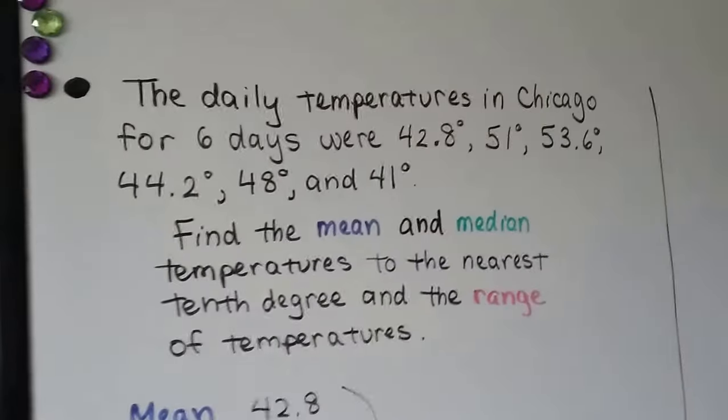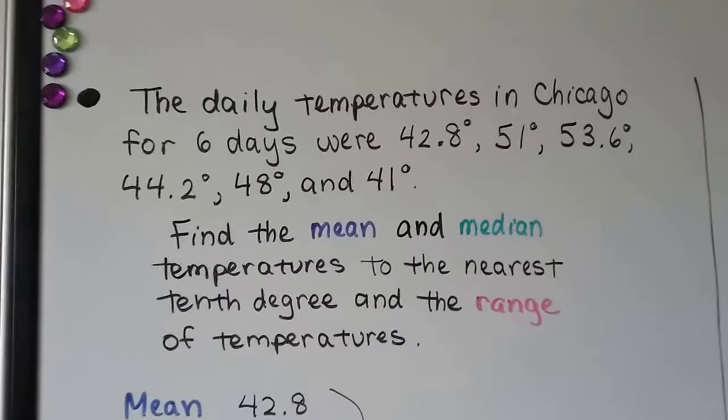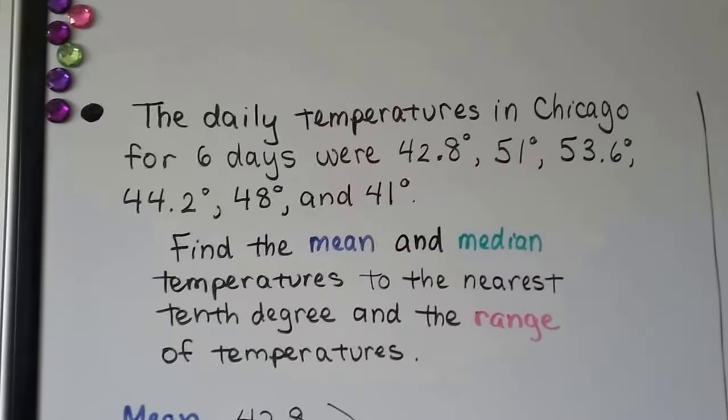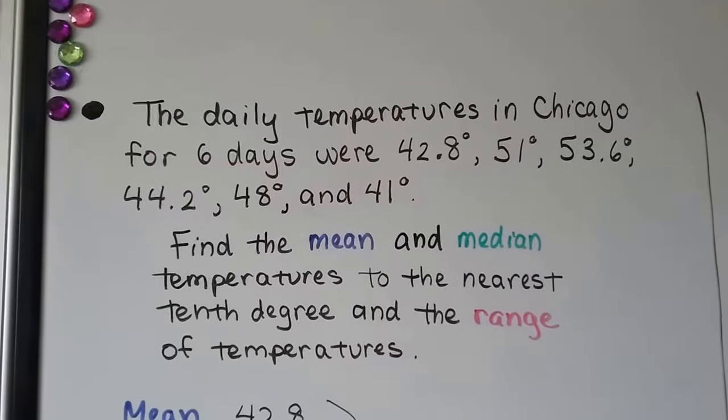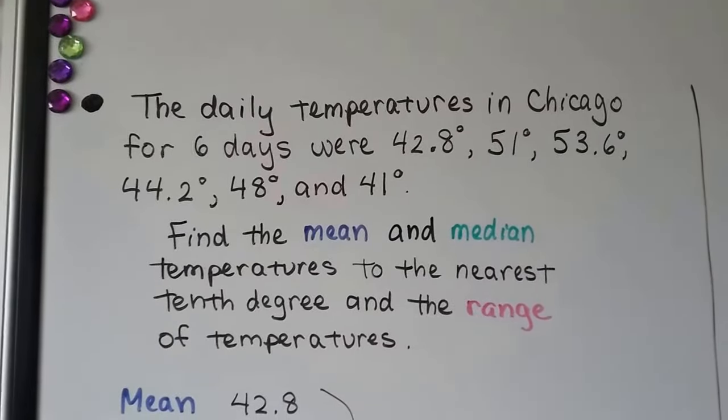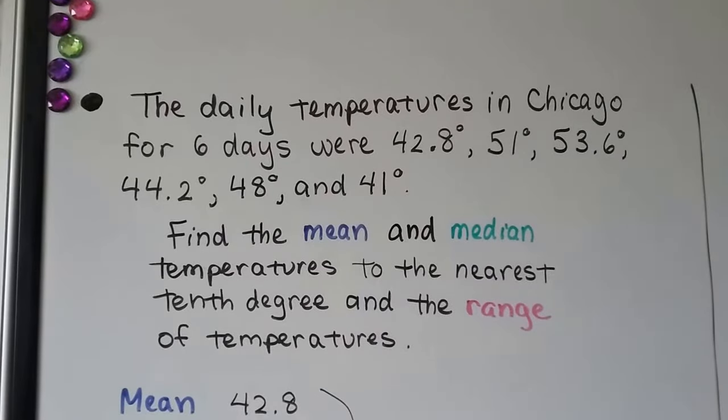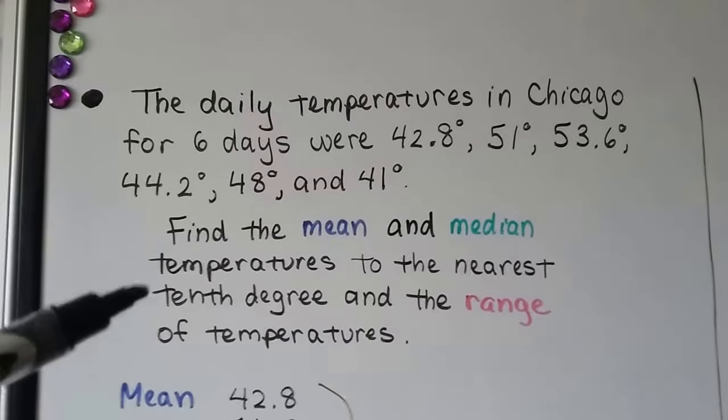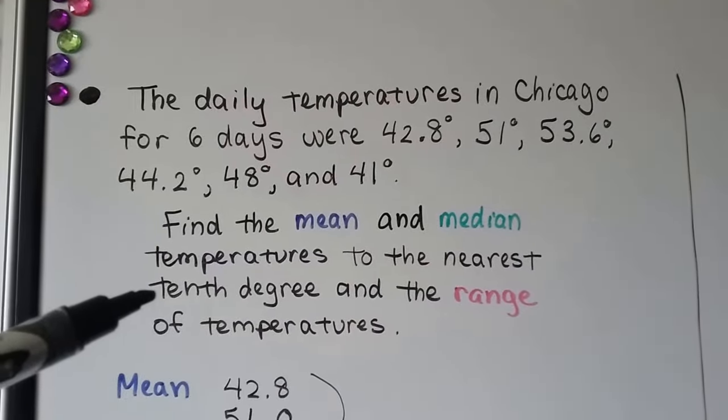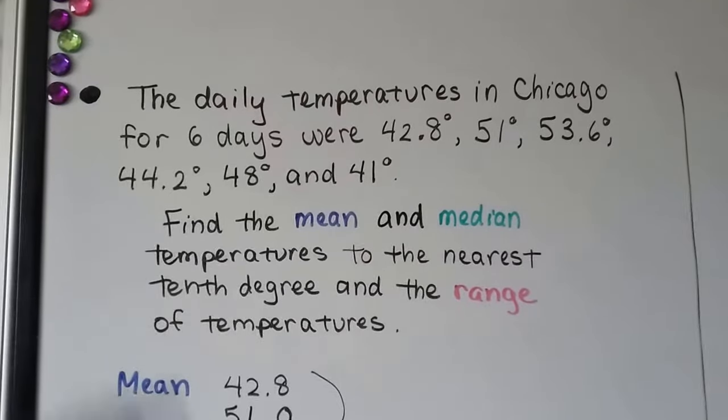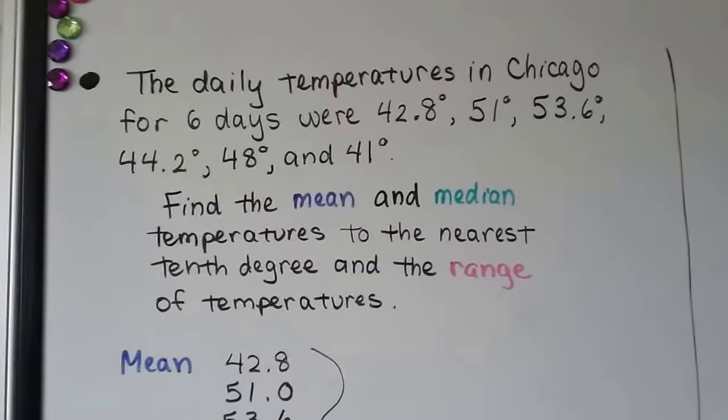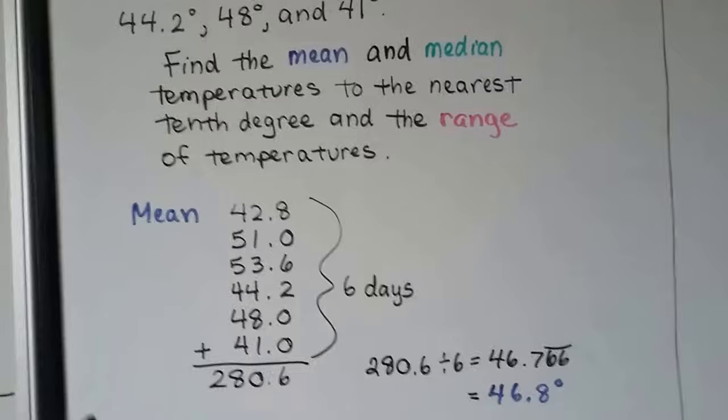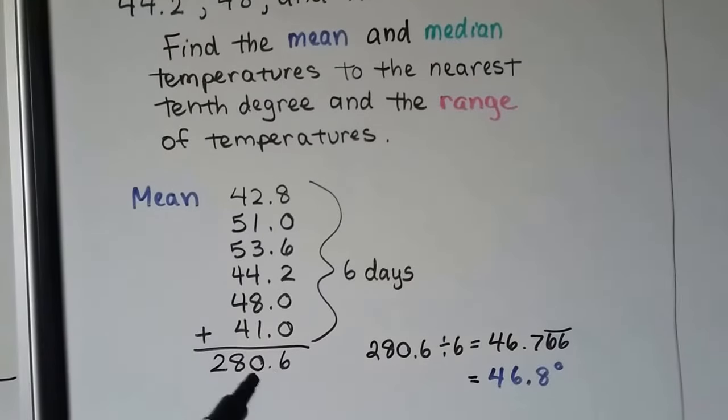This one says, the daily temperatures in Chicago for six days were 42.8 degrees, 51 degrees, 53.6 degrees, 44.2 degrees, 48 and 41. Find the mean and median temperatures to the nearest tenth degree and the range of temperatures. So in a case like this, it says to the nearest tenth degree, they might trick you. And one of the choices for multiple choice might be not to the tenth degree. So be very careful how the wording is. To find the mean, we just add them all up and it's six days. There's six temperatures. When we add it up, we get 280.6. We just divide that by six because there's six numbers that we added.